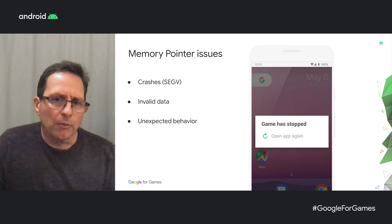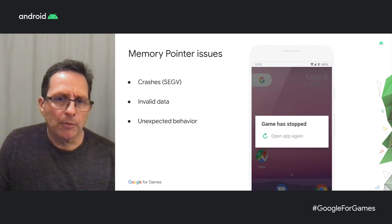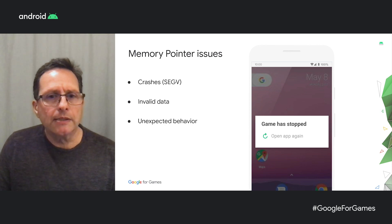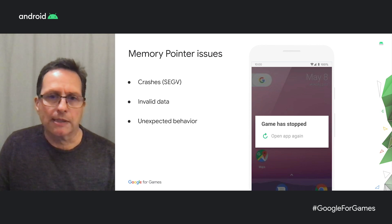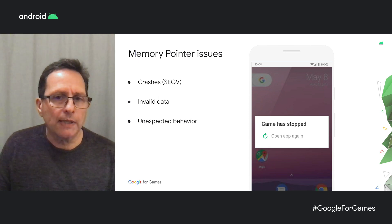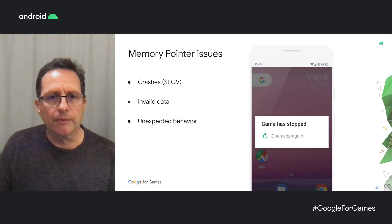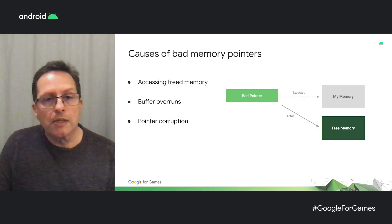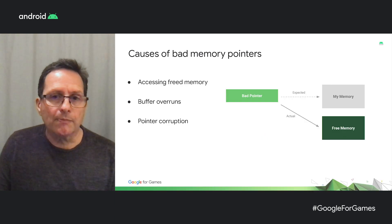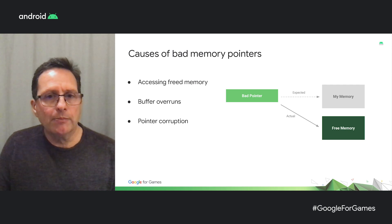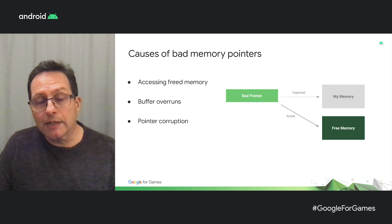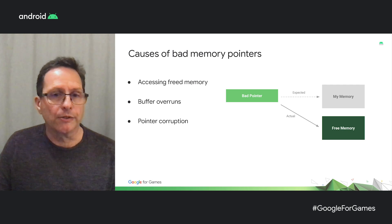Another type of memory problem is with bad memory pointers. This can lead to crashes like segmentation violations, accessing invalid data, or in general, unexpected behavior. Some of the causes of bad memory pointers include accessing freed memory, buffer overruns, or uninitialized or corrupted memory pointers.